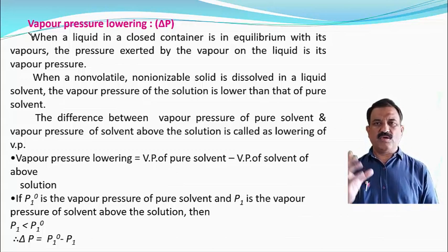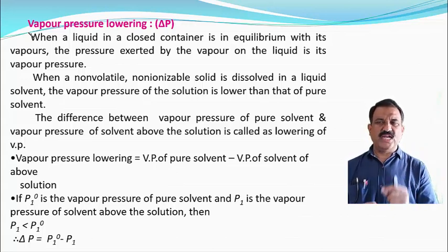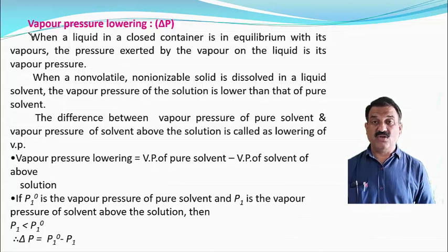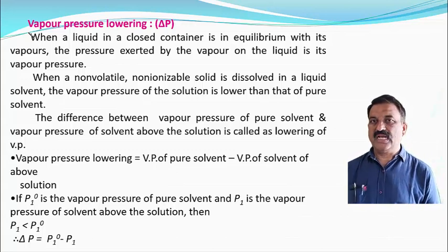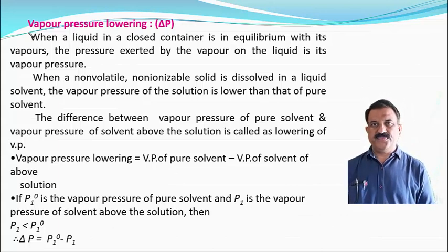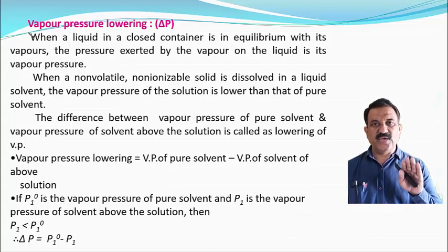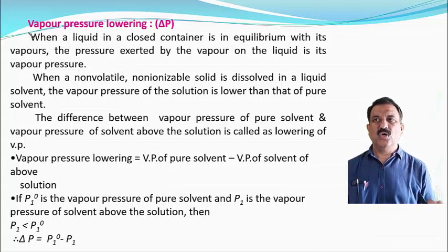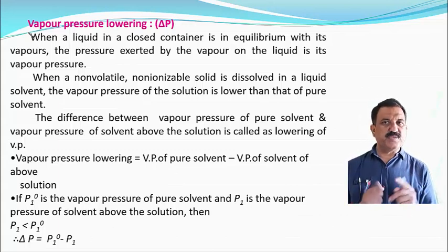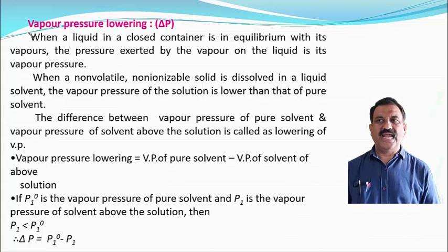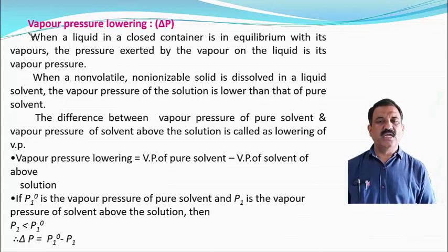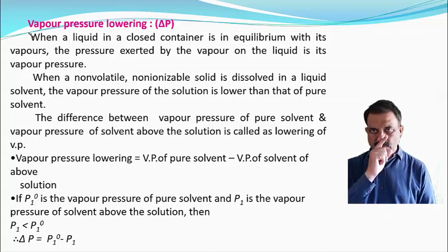For example, the solvent is volatile and the solute is a non-electrolyte. Non-volatile means a substance which does not have a tendency to go into the gaseous state. The vapour pressure of a solution containing a non-volatile solute is always less than the vapour pressure of the pure solvent. The difference between the vapour pressure of the pure solvent and the vapour pressure of the solvent above the solution is called the lowering of vapour pressure.